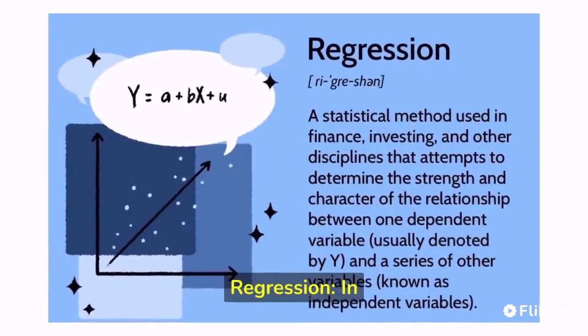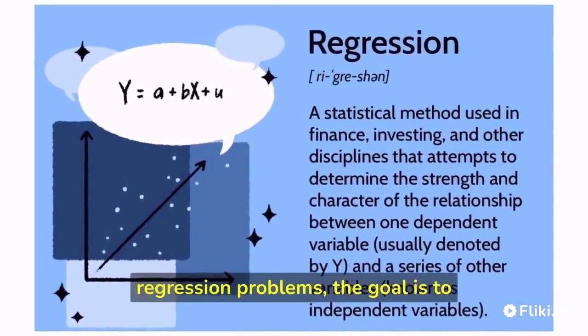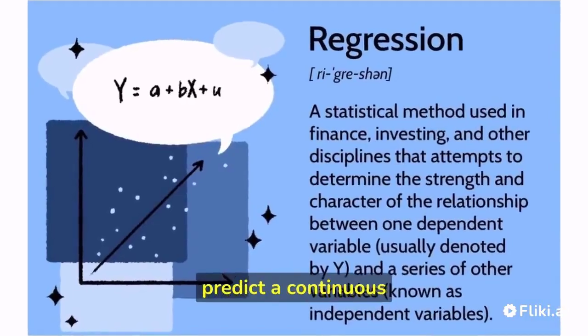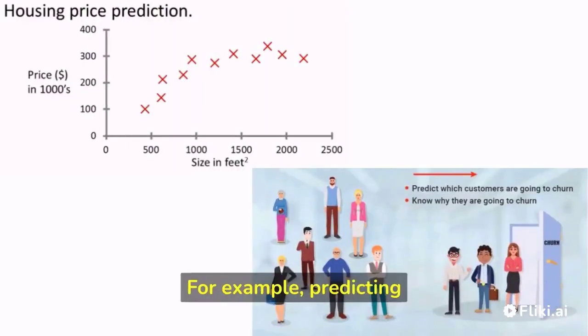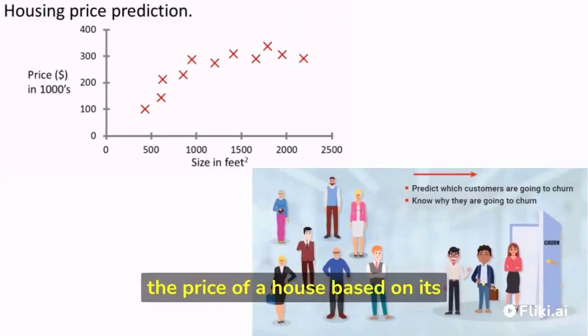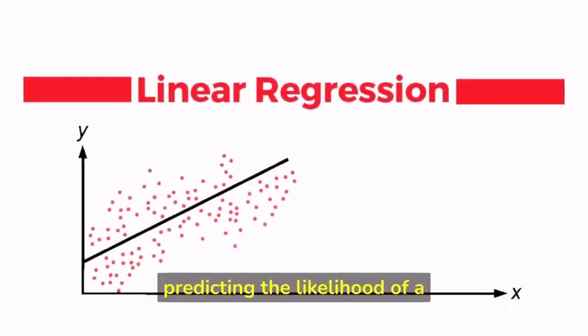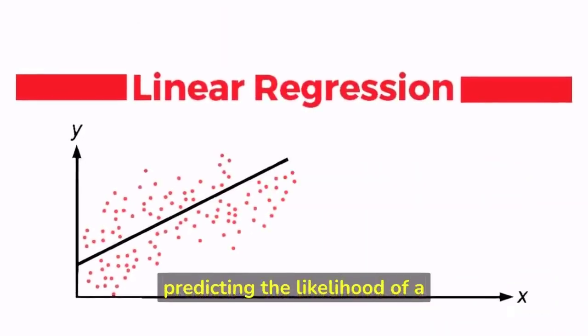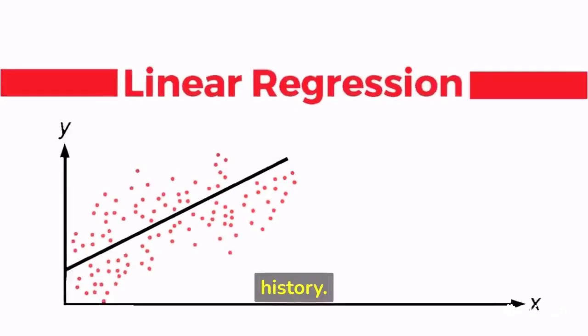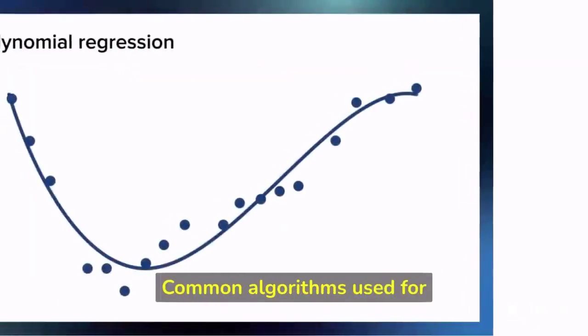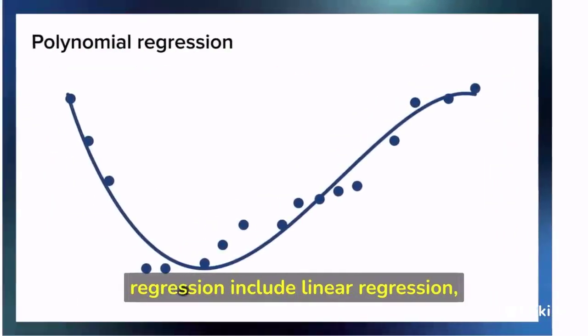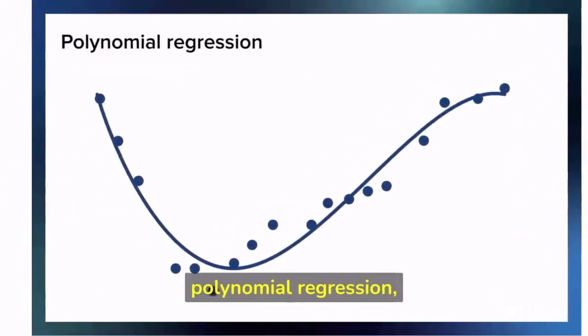In regression problems, the goal is to predict a continuous outcome or value. For example, predicting the price of a house based on its square footage, or predicting the likelihood of a customer churning based on their usage history. Common algorithms used for regression include linear regression, polynomial regression, and decision trees.